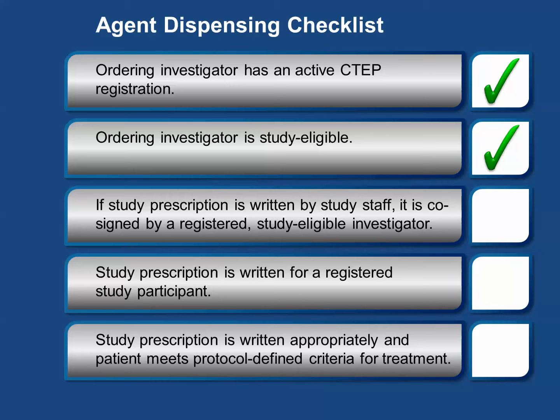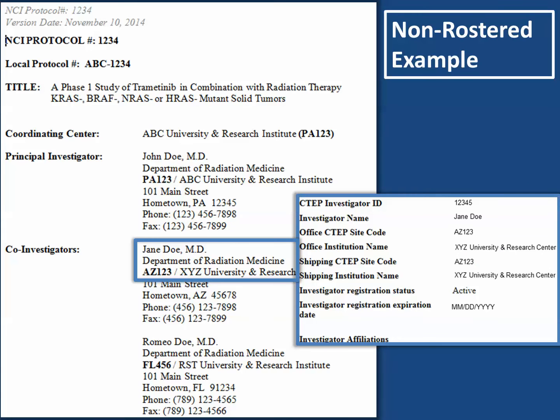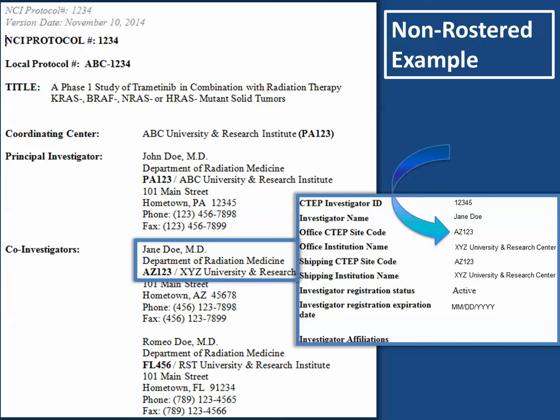Let's review a couple of examples. For non-rostered, single, or multi-center studies, each study eligible institution and ordering investigator must be listed on the protocol title page. In this example of a multi-center study, we verified the investigator name, institution, and CTEP site code on the title page with the investigator registration status search results. This investigator has an active CTEP registration and is eligible to participate.